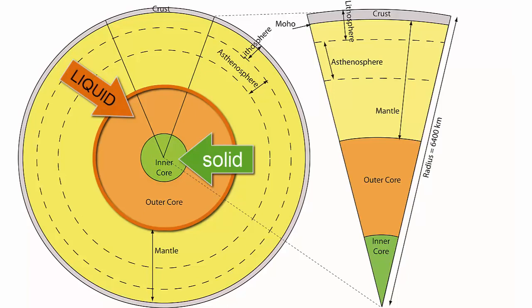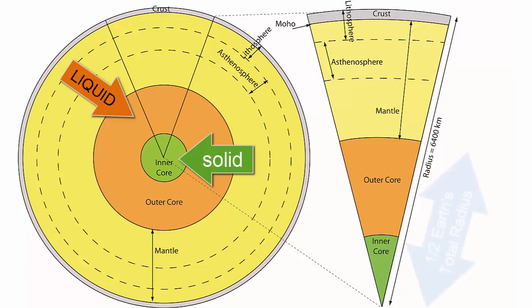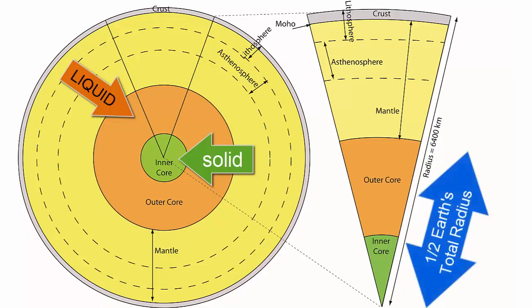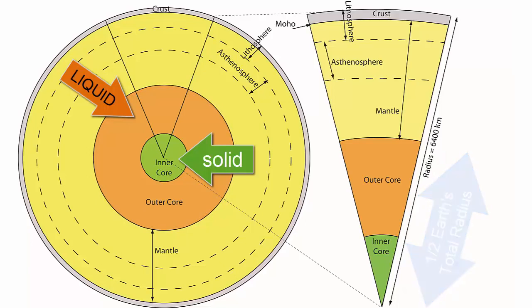Because pressures are less in the outer core, iron can be stable as a liquid. For comparison, the outer core is almost twice as thick as the inner core. Combined, however, these two layers represent about one-half the radius of Earth.